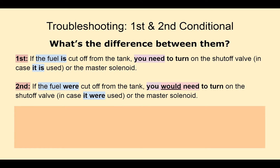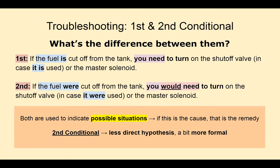As you can see, the most common way of explaining troubleshooting tasks is using the first and second conditional. But what's the difference between them? If the fuel is cut off from the tank, you need to turn on the shut-off valve, in case it is used, or the master solenoid. If the fuel were cut off from the tank, you would need to turn on the shut-off valve, in case it were used, or the master solenoid. Both are used to indicate possible situations — if this is the cause, that is the remedy. But in the case of the second conditional, it is a less direct hypothesis, and therefore it sounds a bit more formal.